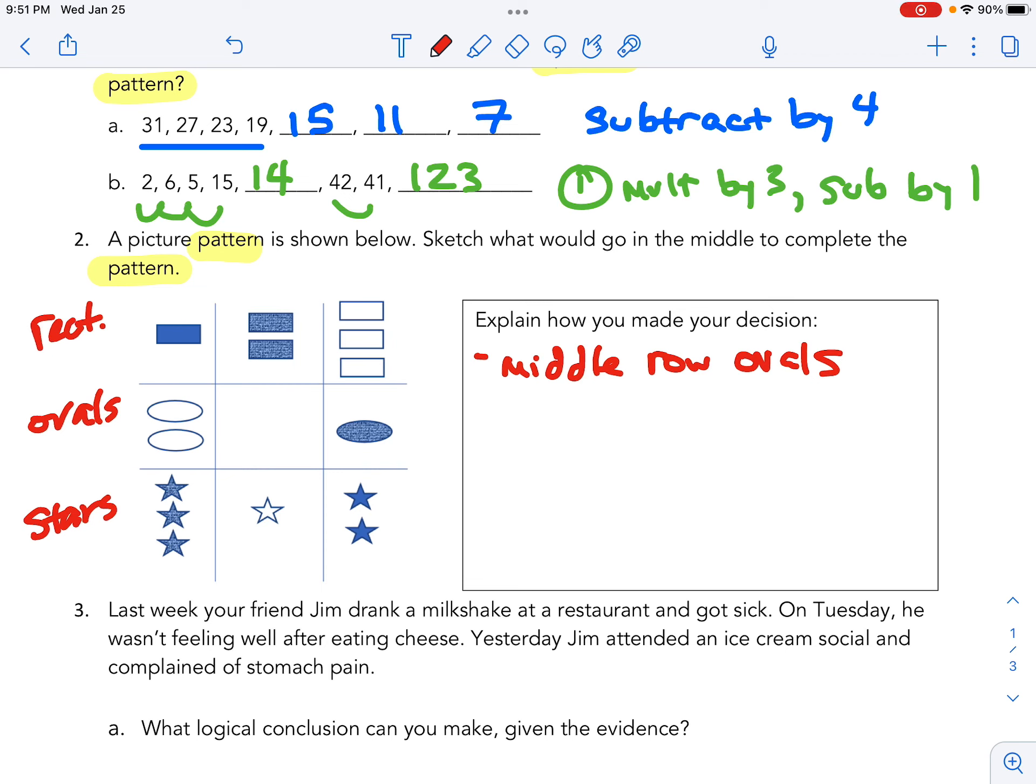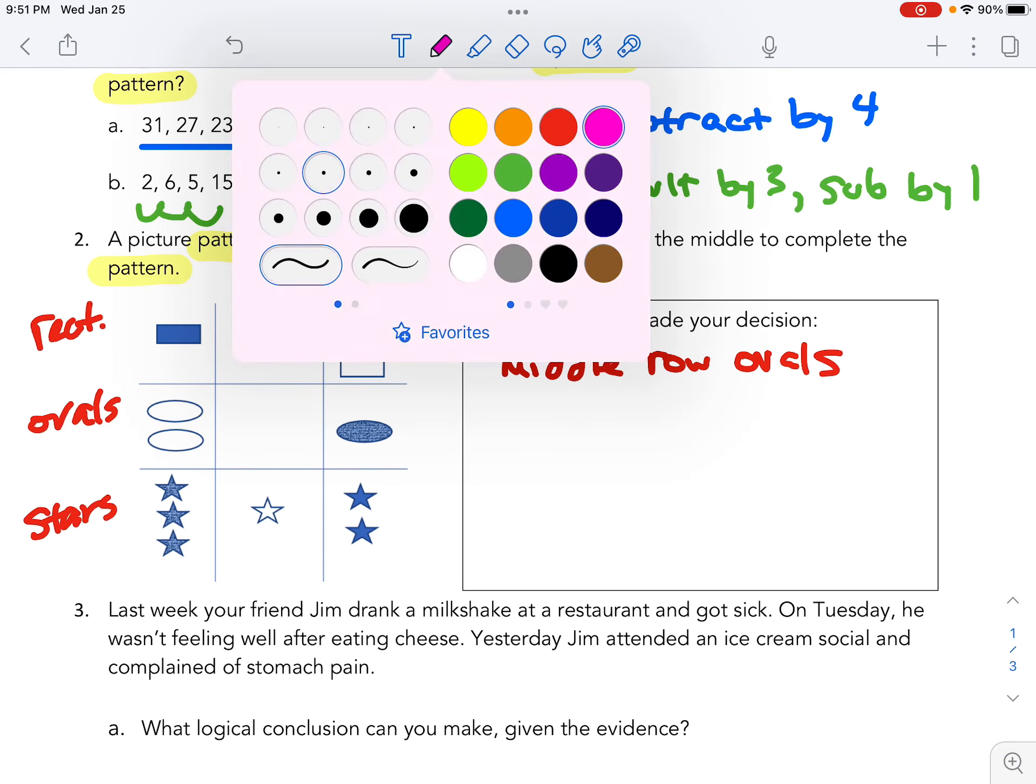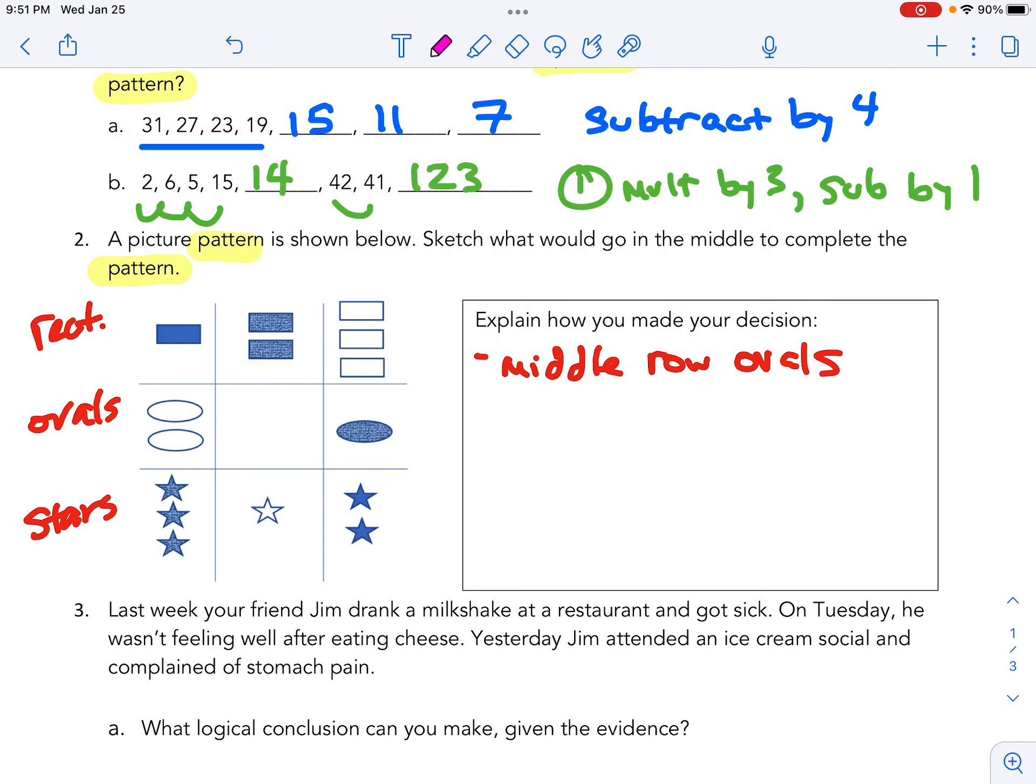You might have also noticed that each image has either one, two, or three of the shapes involved.